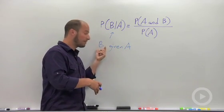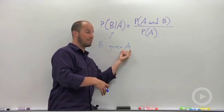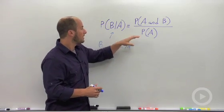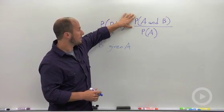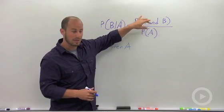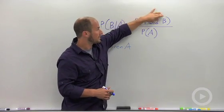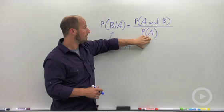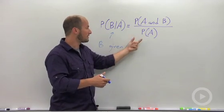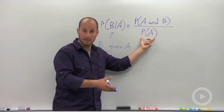So this would be, find the probability you win gold given you placed in the top three is equal to the probability of both events occurring. So probability of gold and top three over the probability of just the given. So probability over top three.